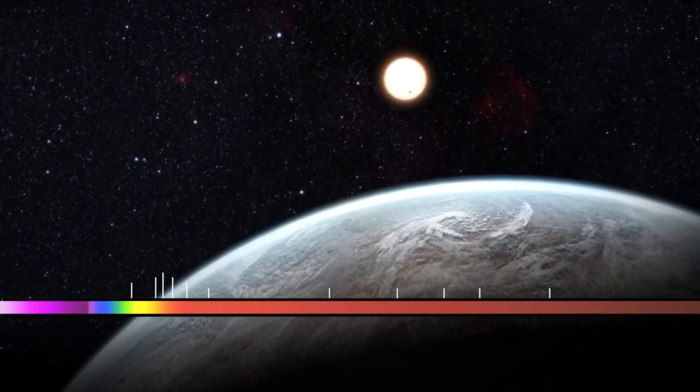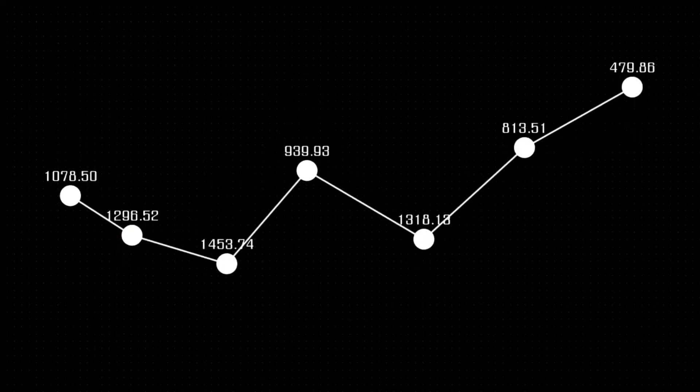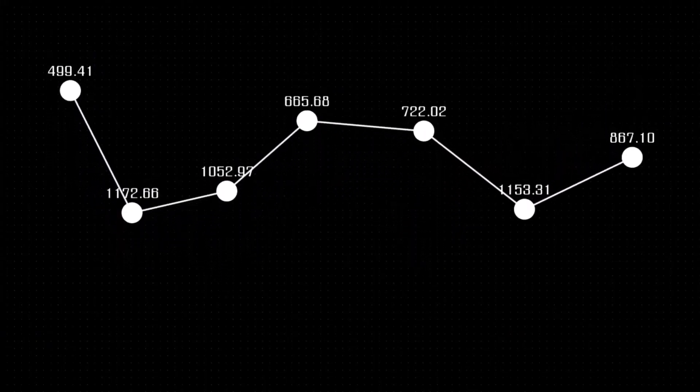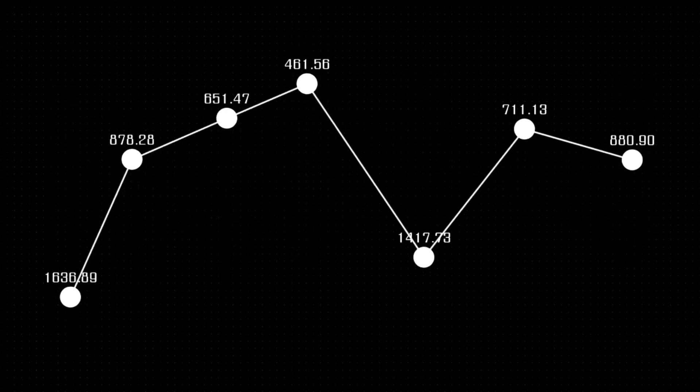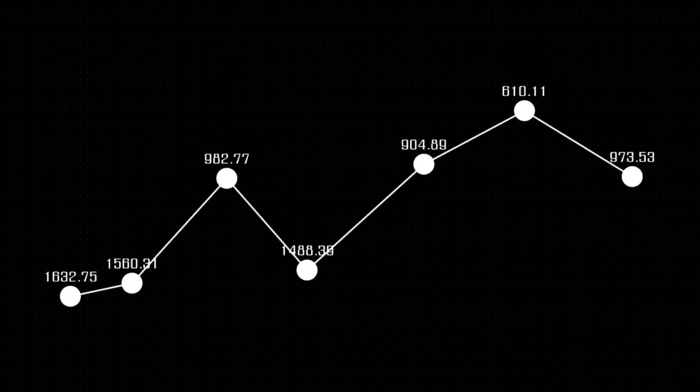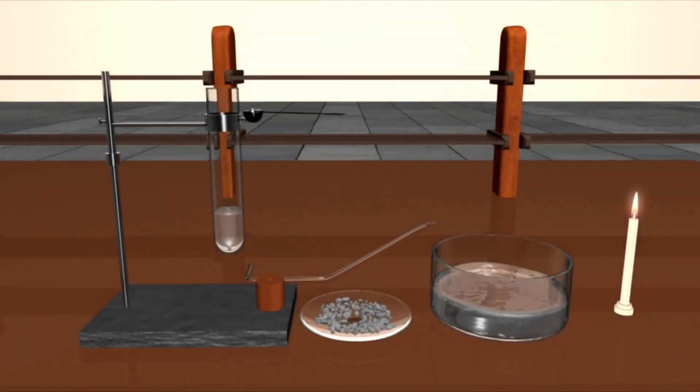Voyager 1 had actually detected the anticipated rise in plasma density; its plasma wave detector had inferred an 80-fold increase. However, there had been no indication of a shift in the ambient magnetic field's direction. Shouldn't that change have been apparent if the vehicle had traveled from a place where the magnetic field originated from the Sun to one where it came from other stars? That was a shocker.